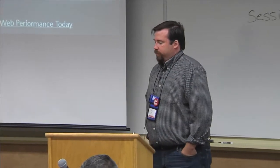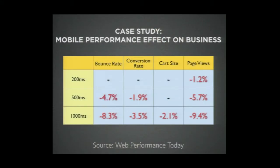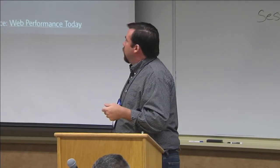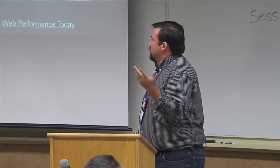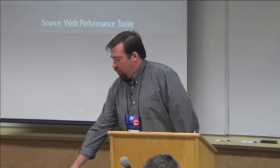There was a case study done by Strange Loop with a client. They found how conversion rates changed based on how slow a network is, which really affects mobile. Basically, if you slow down delivery of the website by just one second, they saw their bounce rate increase 8.3% — one in ten people left the website because it took one more second to load than normal. And they lost 3.5% in sales. That's one second.